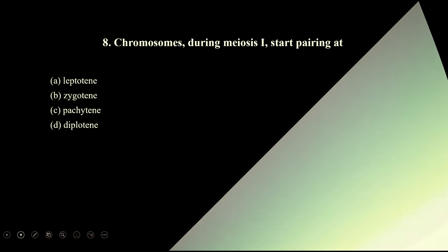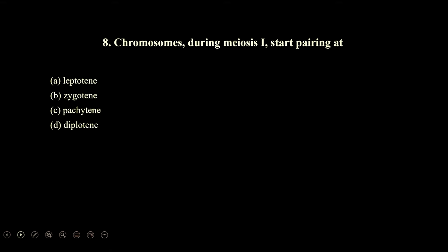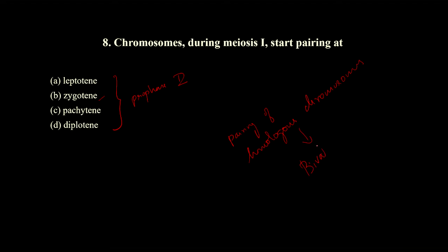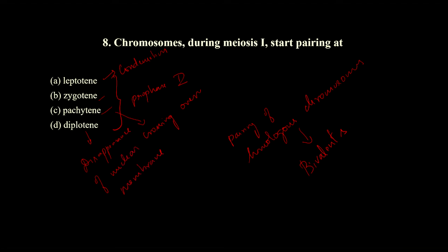The next question: chromosomes during meiosis 1 start pairing at which stage? In leptotene, chromosomes start condensing and asters form. In zygotene, there will be pairing of homologous chromosomes forming bivalents. In pachytene, crossing over happens. In diplotene, there will be disappearance of nuclear membrane. The correct option is zygotene, where pairing of homologous chromosomes happens.